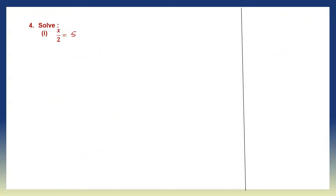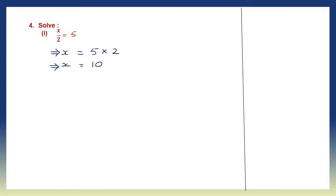Question 4, first one: x by 2 equals 5. We are solving for x, so we leave x on the left hand side and 5 on the right. Now 2 is division here, so when we transpose it to the right hand side it becomes multiplication into 2. So x is equal to 5 times 2, which is 10.